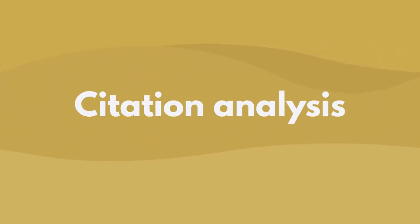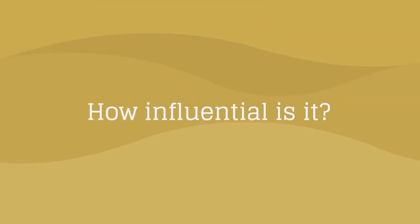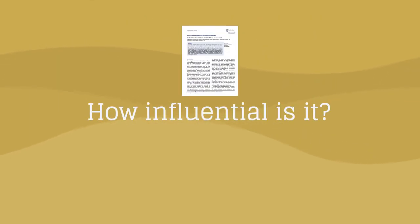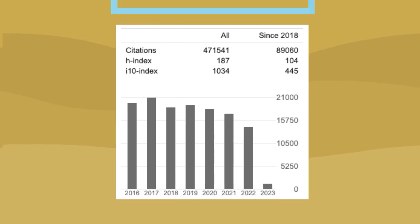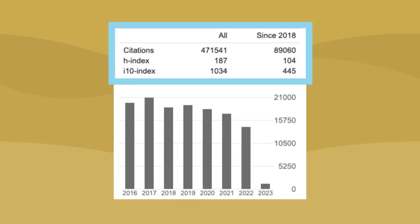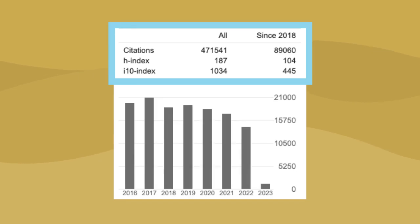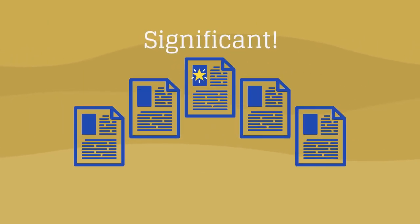Citation analysis is a method used to evaluate the influence of an information resource, like a journal article or book. It does this by analyzing the number and quality of citations it receives from other works. This can be used to assess the overall significance of a work within a particular field.